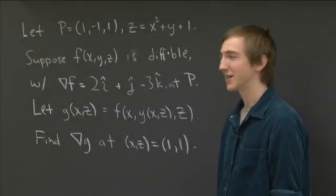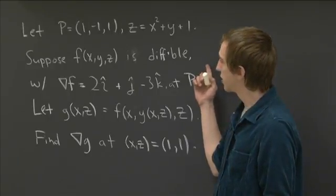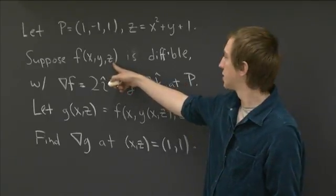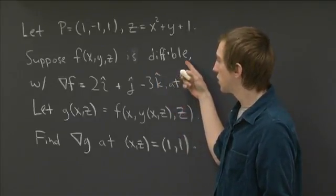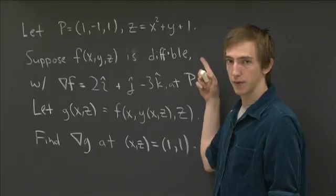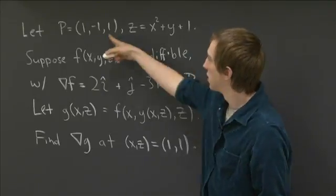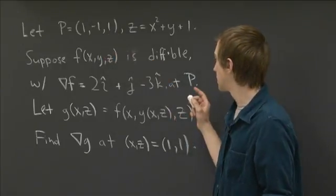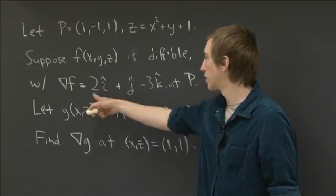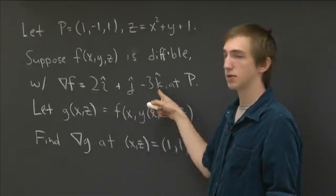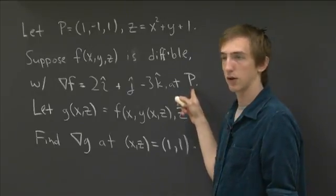Hello, and welcome back to recitation. So in this problem, we're considering a function f of three variables, f of x, y, z, and it's differentiable. We're not told a formula for f. We just know that it's differentiable at this point p, which is (1, -1, 1), and we're told that the gradient of f at that point is the vector 2i + j - 3k. So all we understand about f is how it looks around the point p.